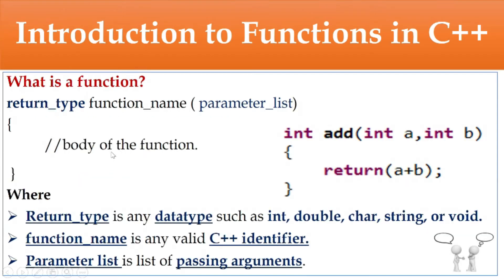So how to define or declare a function? It starts with the return type, followed by the function name and parameter list. Within curly braces, you define the body of the function. The return type can be any data type such as integer, double, character, string, or void. The function name is any valid C++ identifier, and the parameter list is a list of passing arguments.